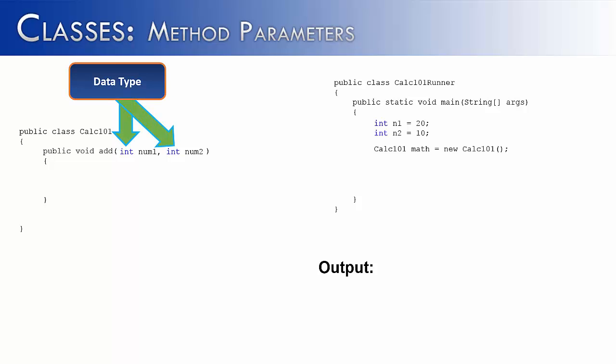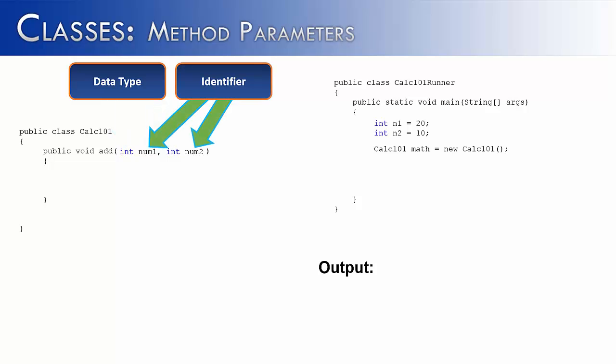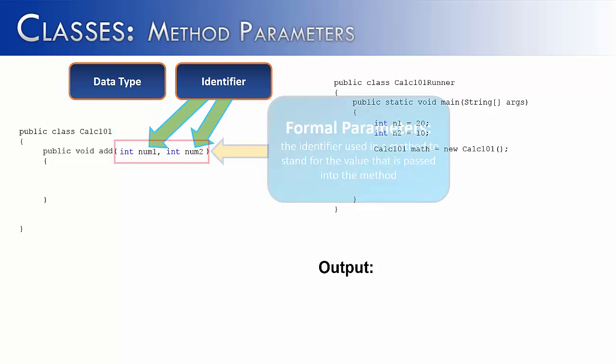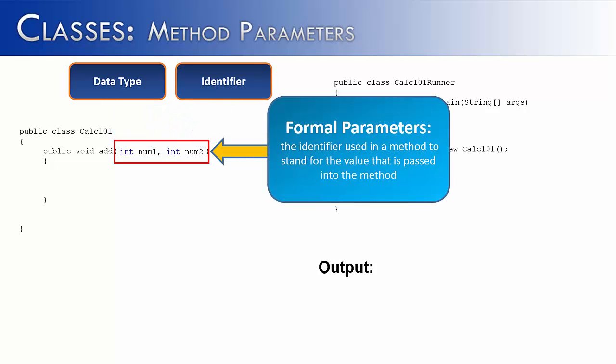Notice that when I add them they have a data type, and they also have an identifier. Anything inside of the parentheses when a method is created are called formal parameters, or they are identifiers used in a method to stand for the value that is passed to them. And we're going to be passing some values to them very soon.